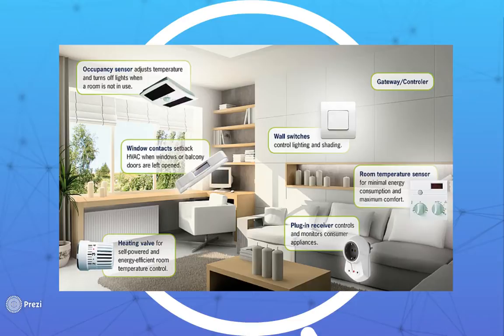Here is a diagram of all the different things that could be programmed or connected in a smart home. So again, here we have an air conditioning and a heating aspect to it, or the windows or wall switches for lighting and shading.